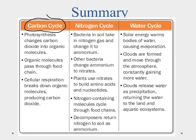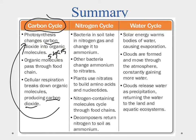Let's review the three cycles. In the carbon cycle, photosynthesis changes CO₂ into organic molecules — sugars. These sugars pass through the food chain, and cellular respiration breaks them down to get energy, producing CO₂ as a byproduct, which flows back to the start. We see this whole cycle repeating itself.